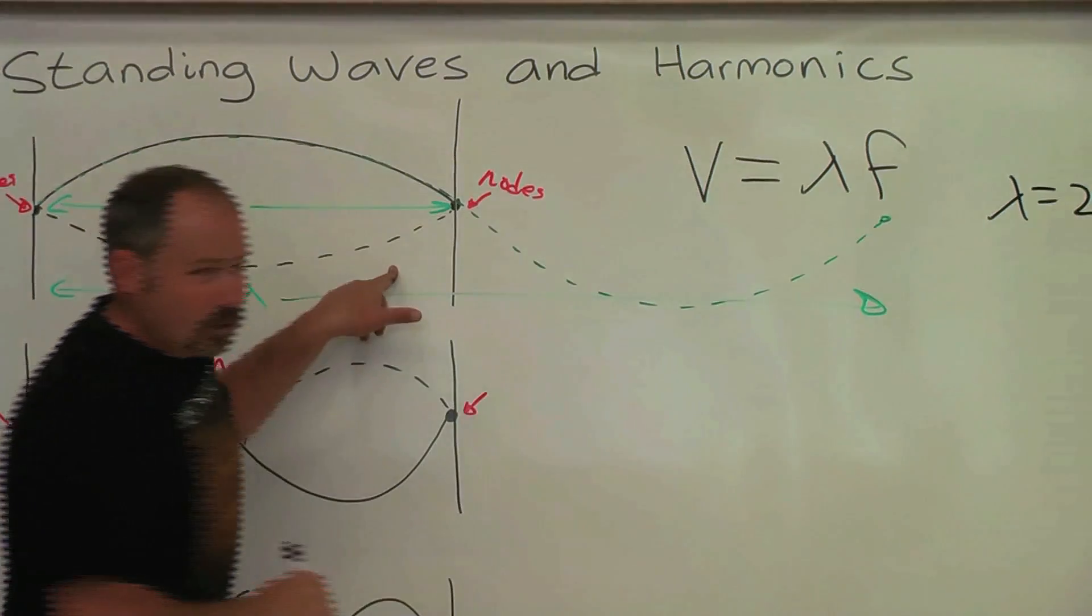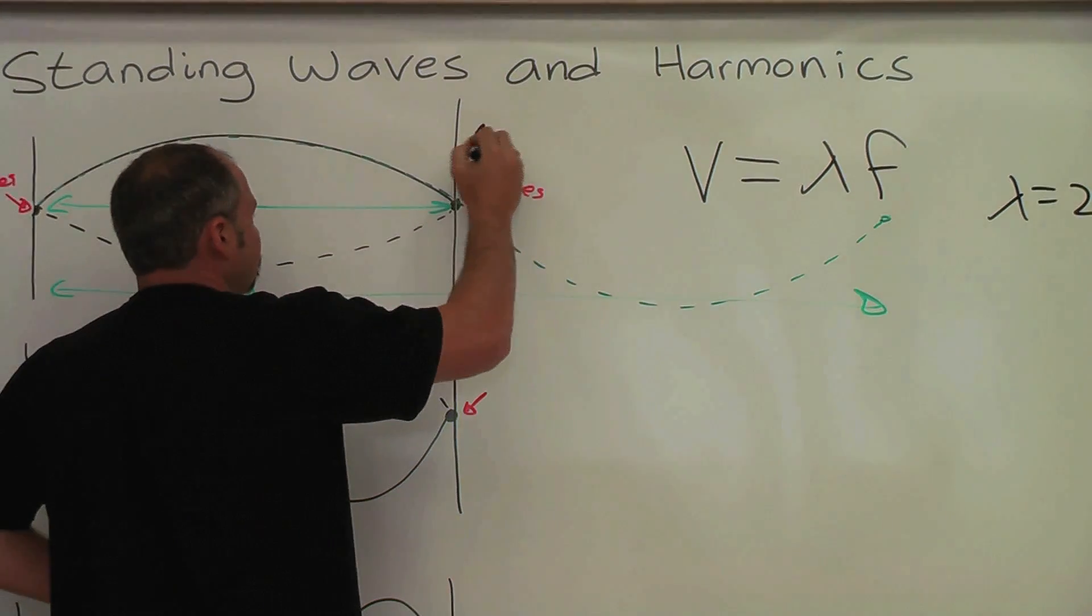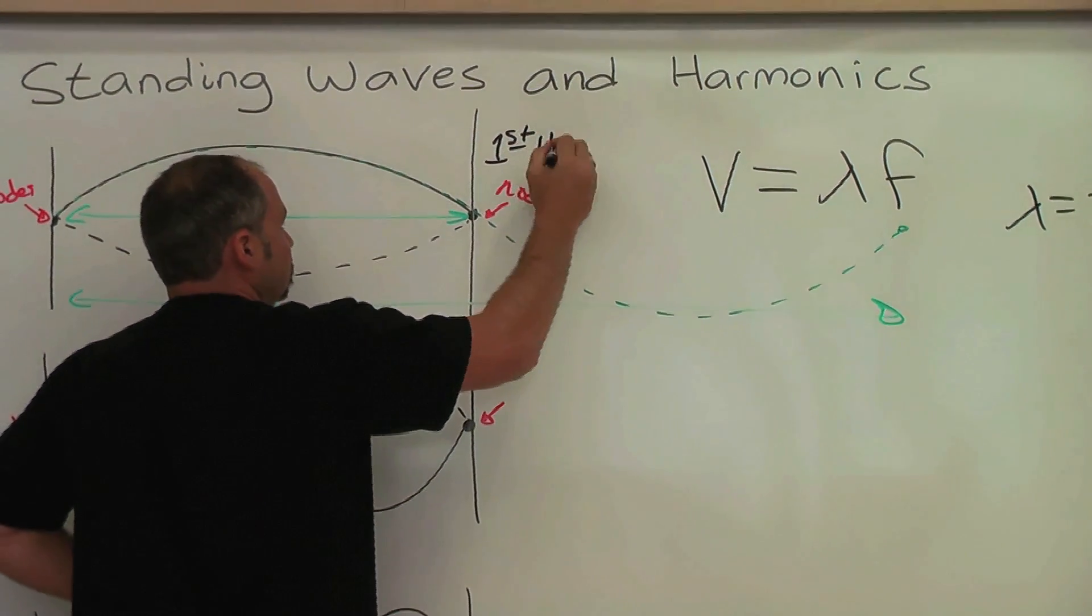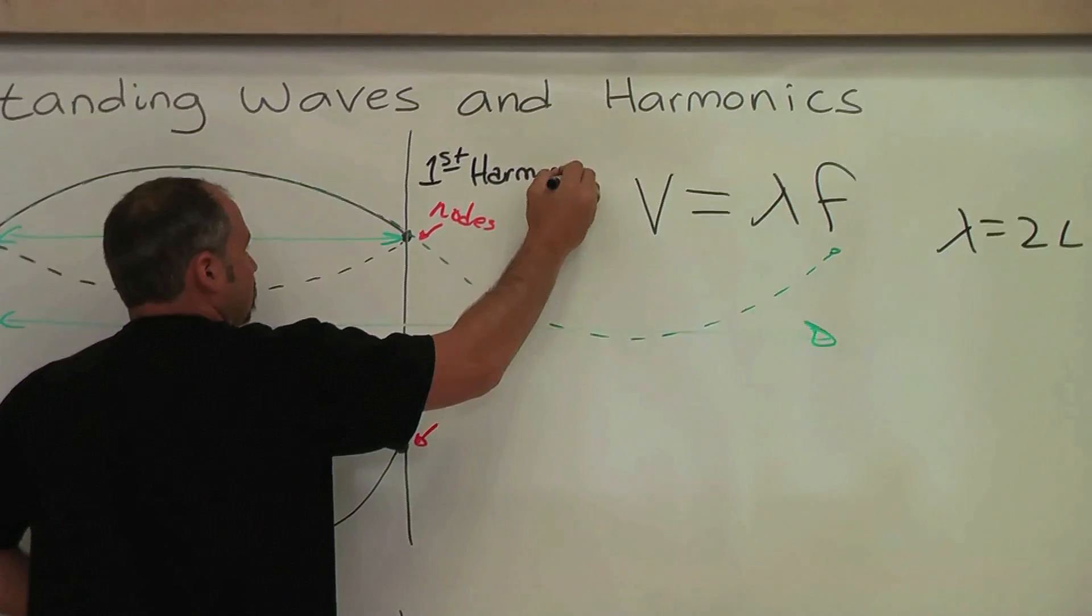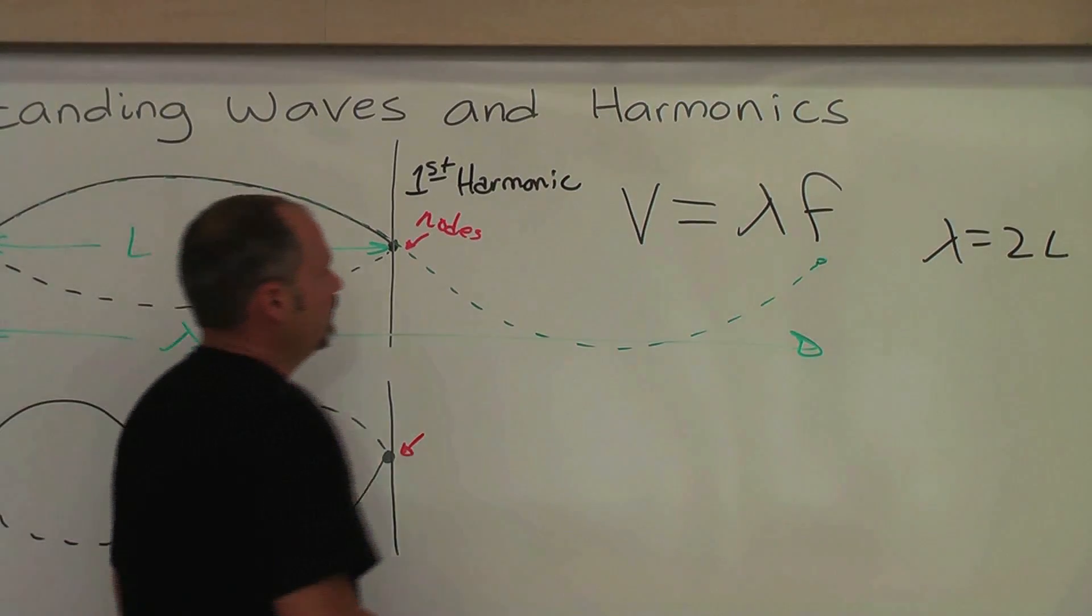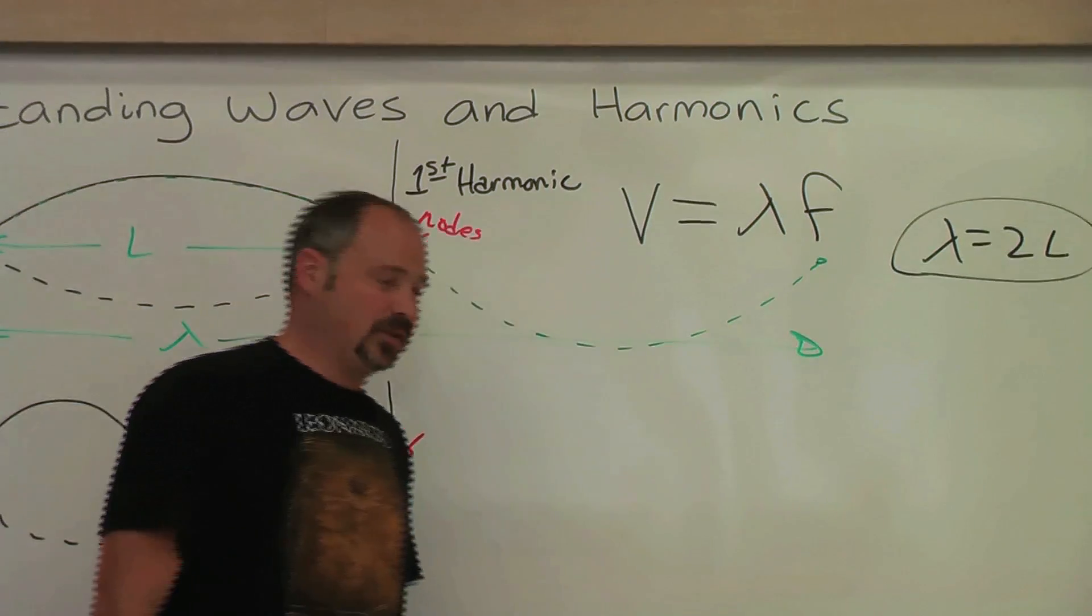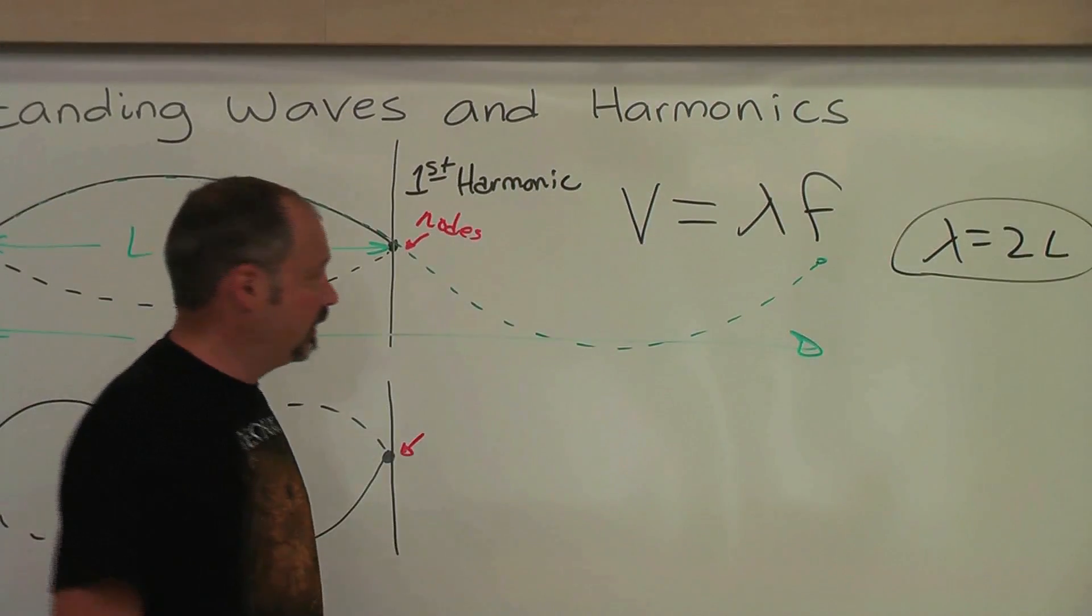So for the first possibility here, which we'll call the first harmonic, it's also called the fundamental frequency. We know that the wavelength is equal to 2 times the length of the string for the first harmonic.